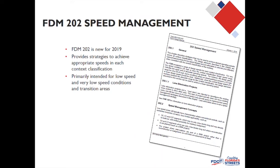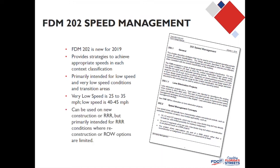This chapter is primarily intended for low speed and very low speed conditions and for transition areas. For the Florida Department of Transportation, very low speed is defined as being between 25 and 35 miles per hour, and low speed is 40 to 45 miles per hour.